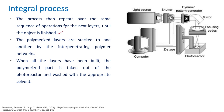The process repeats for each subsequent layer until the final object is complete. The polymerized layers are stacked and bonded to one another by interpenetrating polymer networks, building up the 3D model. When all layers have been built, the polymerized part is taken out from the photo reactor, washed with an appropriate solvent, and then used for the intended application.